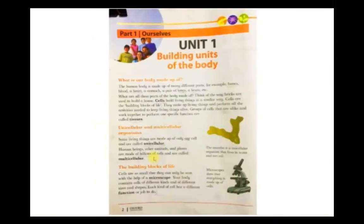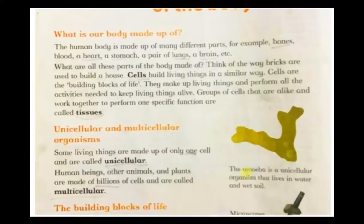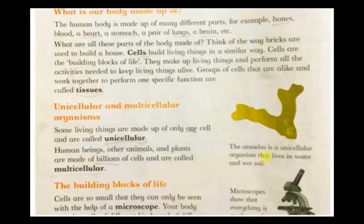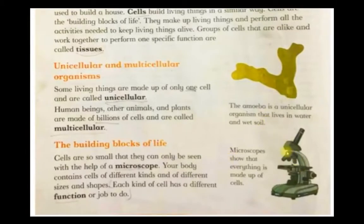There are numerous organisms on our planet Earth. Some of them are made up of only one cell and are known as unicellular organisms. An example of such an organism is amoeba, as you can see in this picture. Amoeba is a unicellular organism that lives in water and wet soil. These microscopic organisms can only be seen through a microscope.